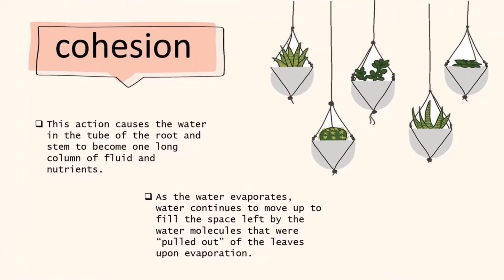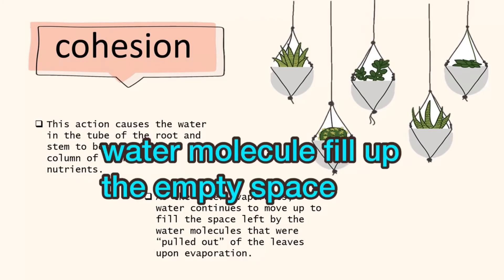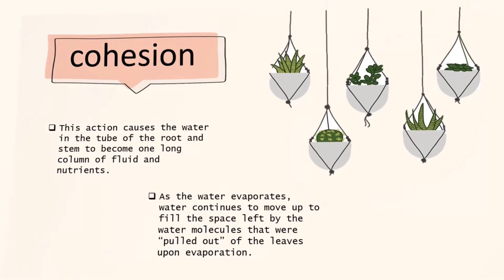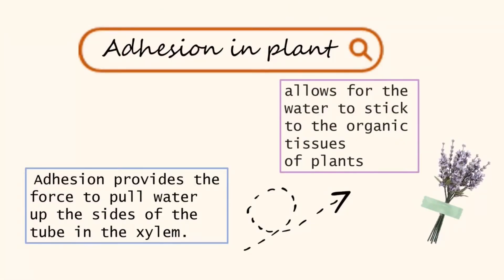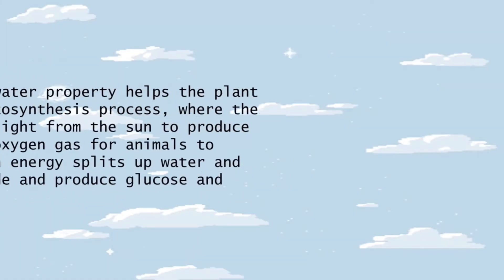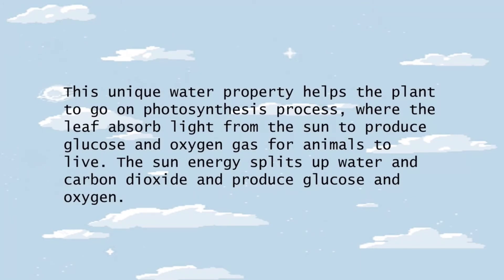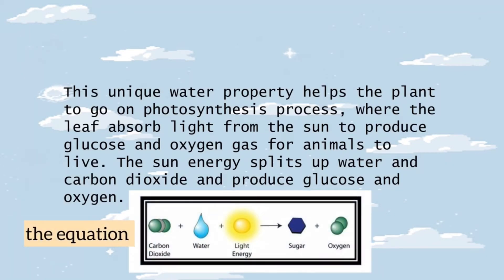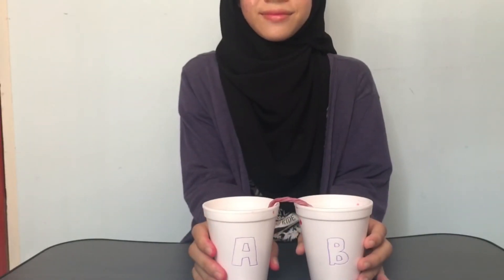The water moves from the root to the stem; as water evaporates, water molecules continue to fill the space left, pulling water out from the leaves. Adhesion provides the force to pull water up the side of the tube in the xylem, allowing water to stick to the organic tissue of the plant. In a nutshell, this water property helps plants undergo photosynthesis, where leaves absorb light from the sun to produce glucose and oxygen gas for animals to live. That's all — thank you!